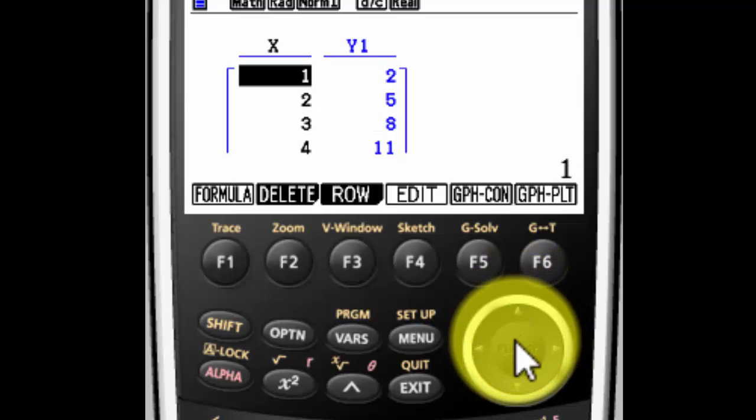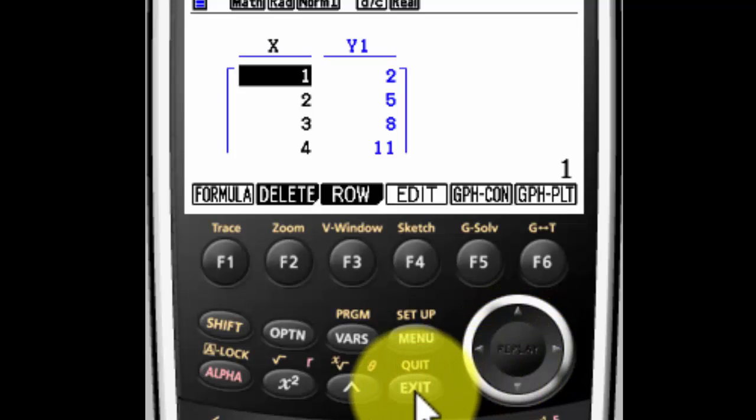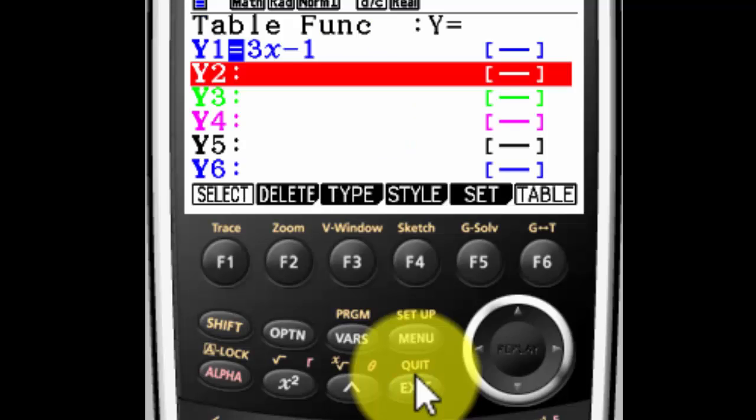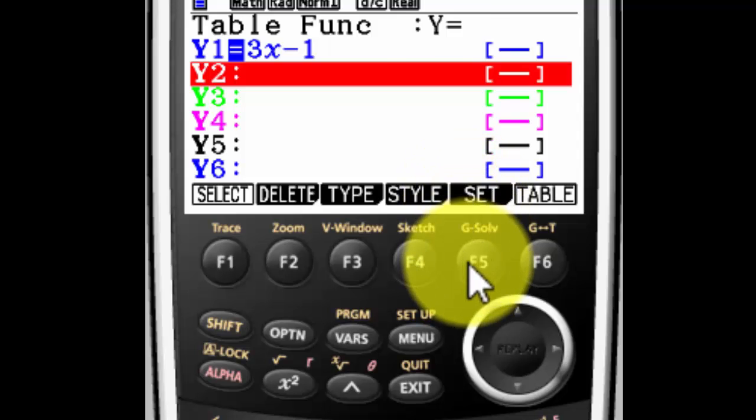Now let's say that that's not what you wanted. So we're going to hit exit. Let's say you want to go from 10 to 20. Exit takes you back one screen. It's kind of like a back arrow on a calculator. And now we want to set it up. So to set it up, we're going to press F5.